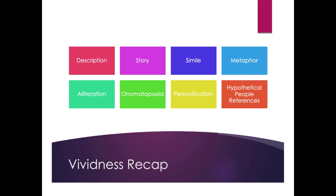Let's recap. Eight tools to create vividness: you can describe, use a story, use comparisons in the form of similes or metaphors, use alliteration, onomatopoeia, personification, and hypothetical references to people — either a rhetorical question or recapping a dialogue as if people are standing right there. Clarity, rhythm, and vividness are the ways we identify people's styles, and also the ways we can create our own style.